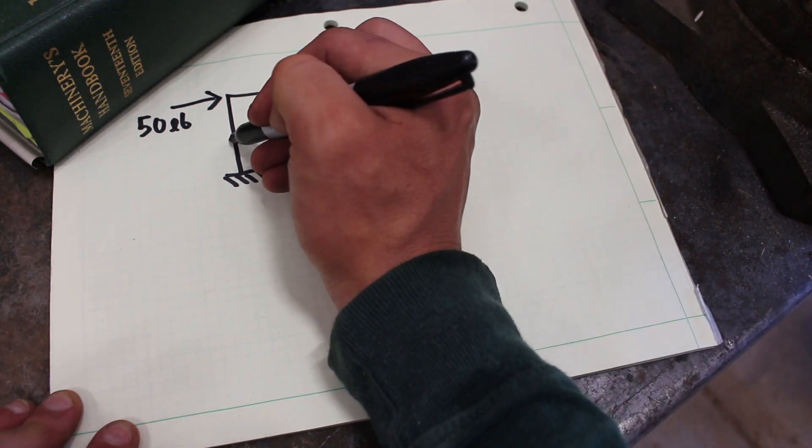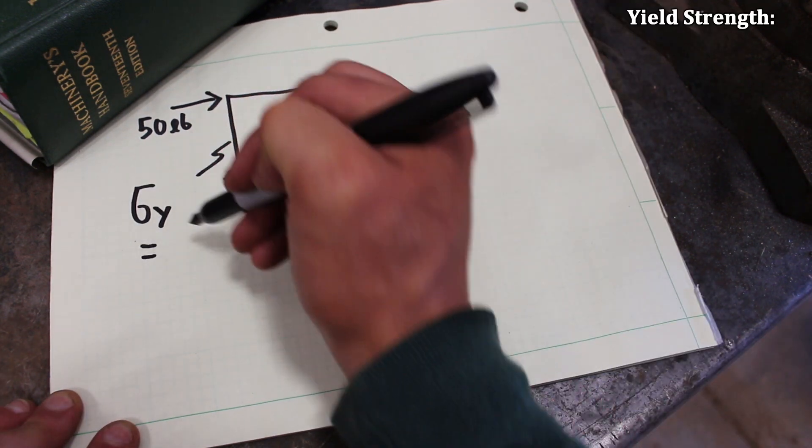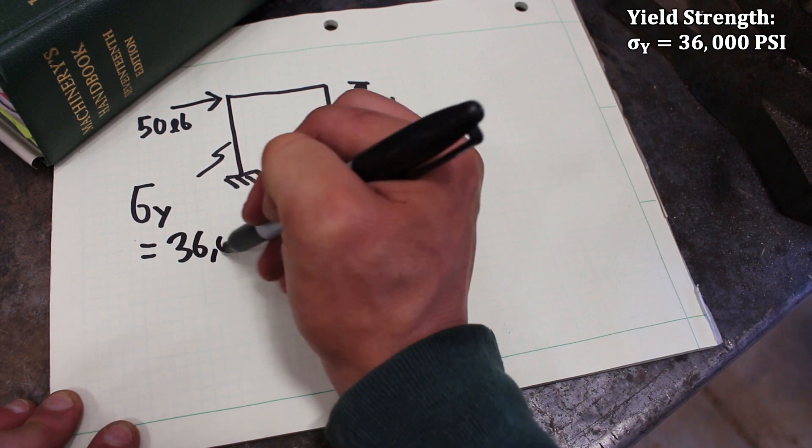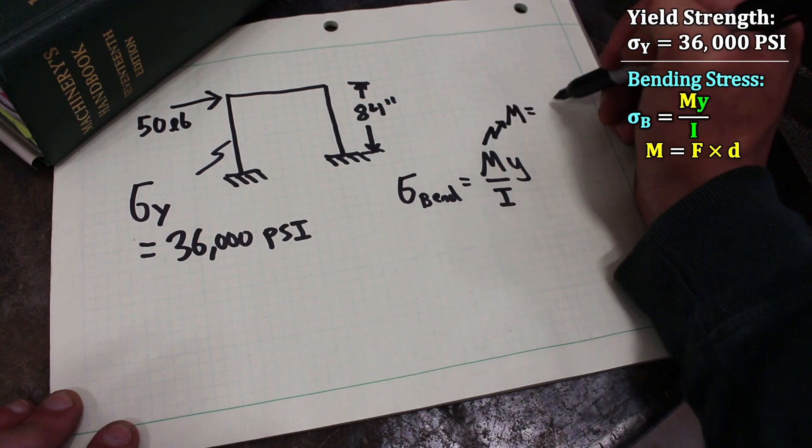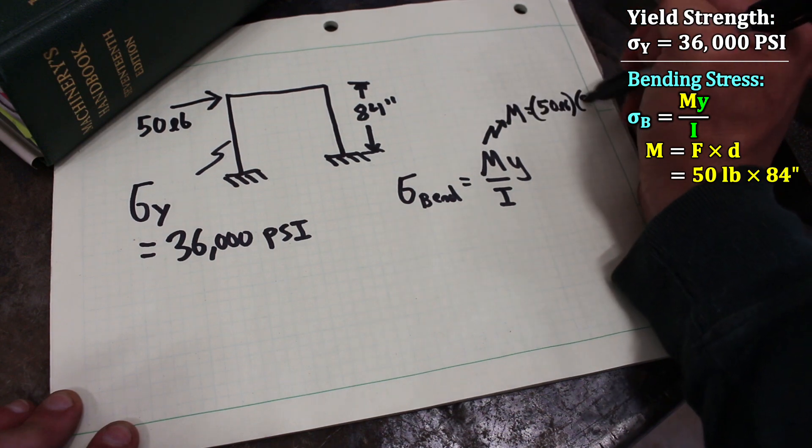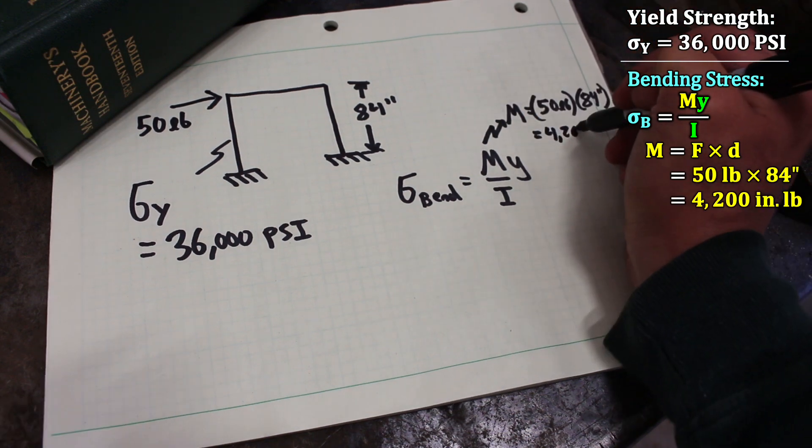These are steel legs so their yield strength we can approximate as about 36,000 psi. The normal stress due to bending equation is My over I. The moment is just that 50 pounds multiplied by the 84 inches or 4,200 inch pounds.